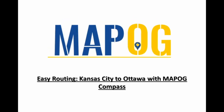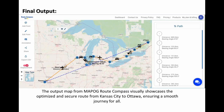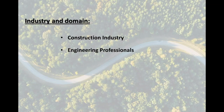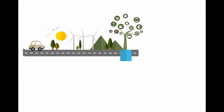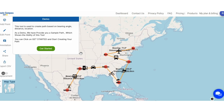Hello everyone. Today let's explore how easy it is to plan a safe journey using the amazing MAP OG Route Compass. MAP OG's Route Compass is your friendly guide, making it easy to choose the best and safest route, so our construction team travels smoothly and avoids any issues. Engineers and the construction industry benefit greatly from using MAP OG Route Compass — a tool that ensures safe and efficient travel for professionals navigating complex job sites.